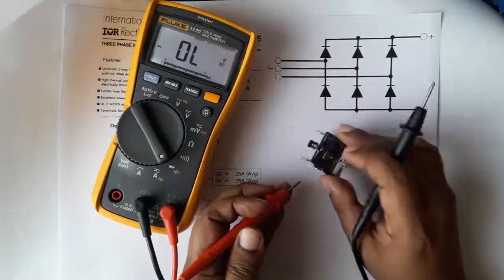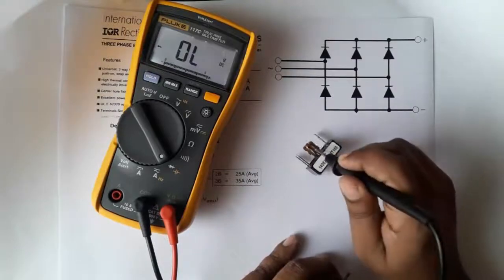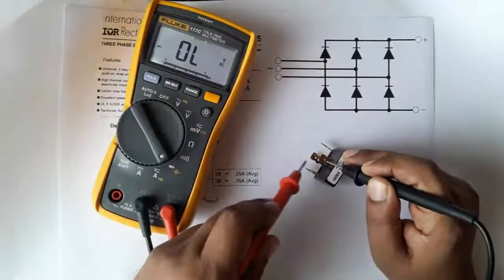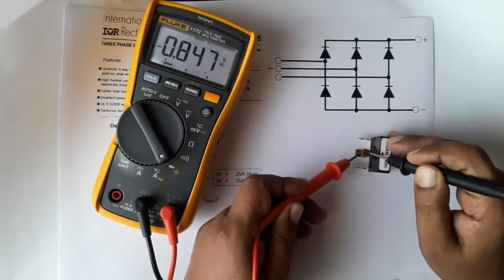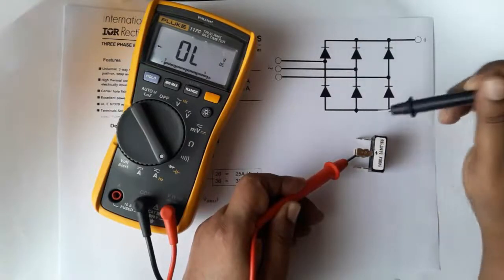Three-phase bridge rectifier testing. International rectifier power module testing—here we're using the black probe in the positive terminal and red probe in the negative terminal.